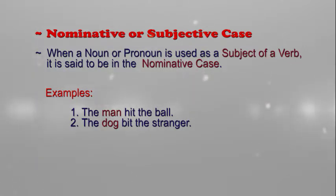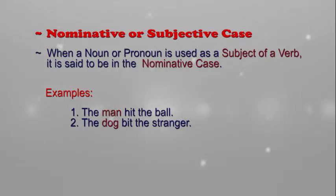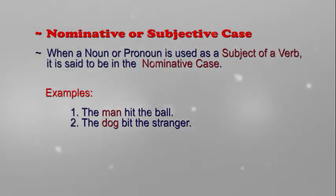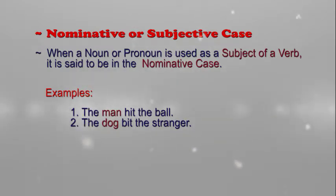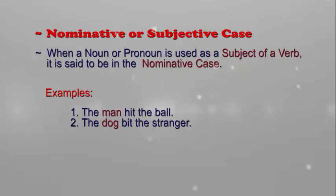In the first sentence, the noun 'man' is the subject of the verb 'hit'. It is the answer to the question: who hit the ball? In the second sentence, the noun 'dog' is the subject of the verb 'bit'. It is the answer to the question: who bit the stranger?